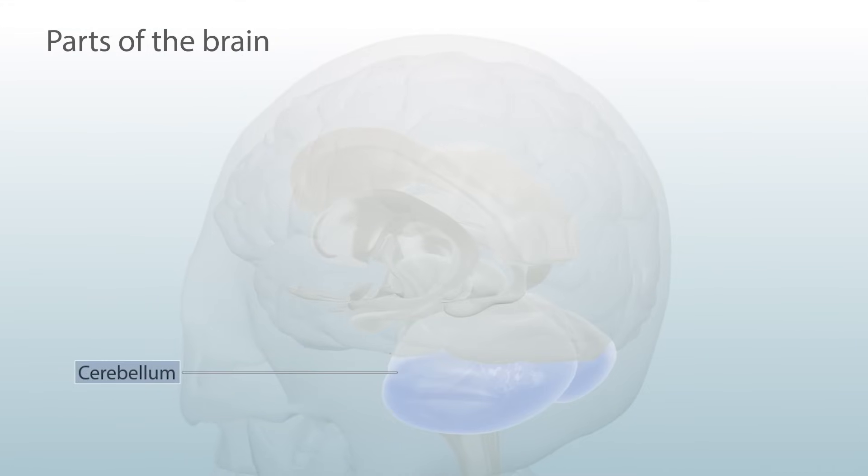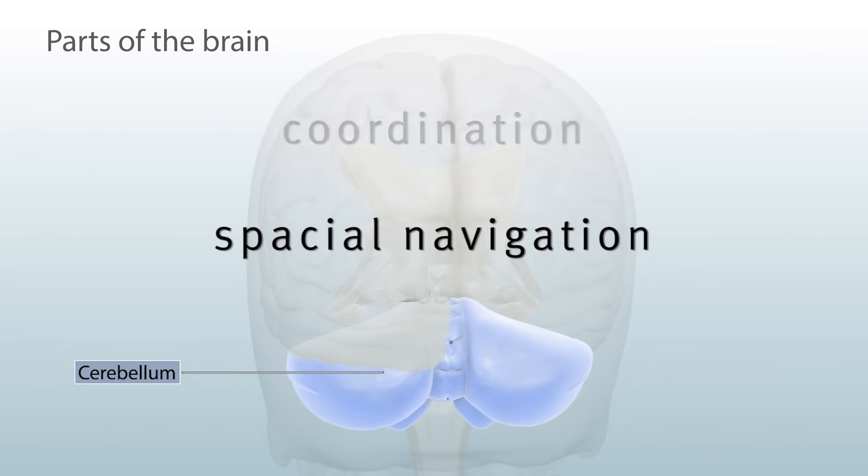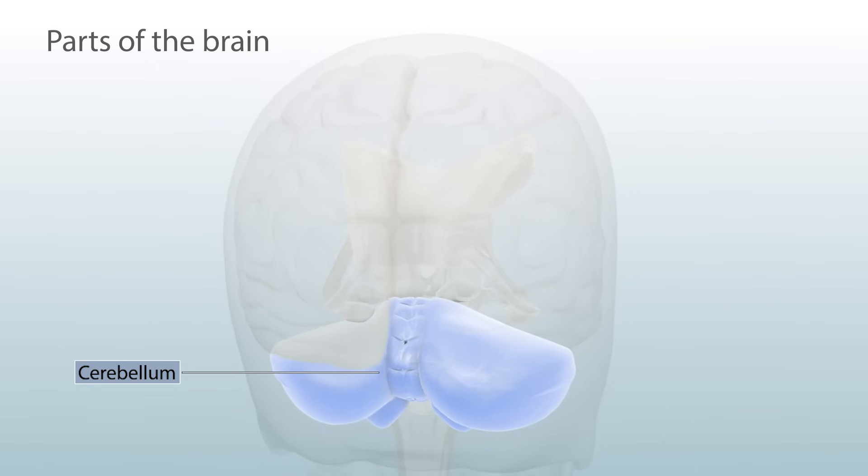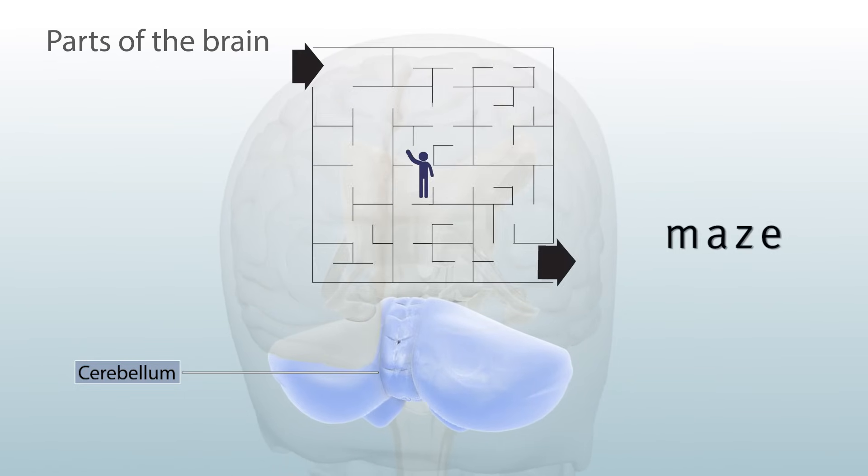Lower in the brain, we find the cerebellum, which plays a key role in motor control, coordination, and spatial navigation, so we can find our way out of a maze, for example.